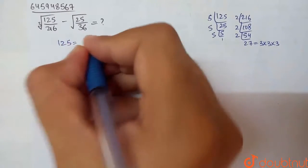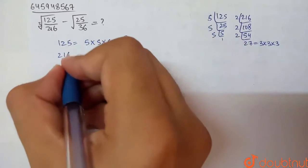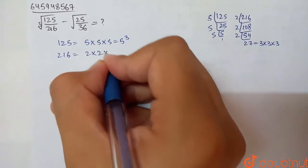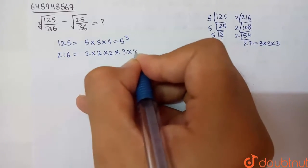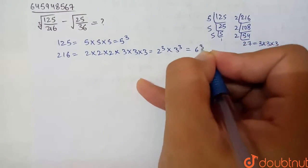Therefore, this is 5 into 5 into 5, that is 5 cubed. 216 is 2 into 2 into 2 into 3 into 3 into 3, that is 2 cubed into 3 cubed, which is nothing but 6 cubed.